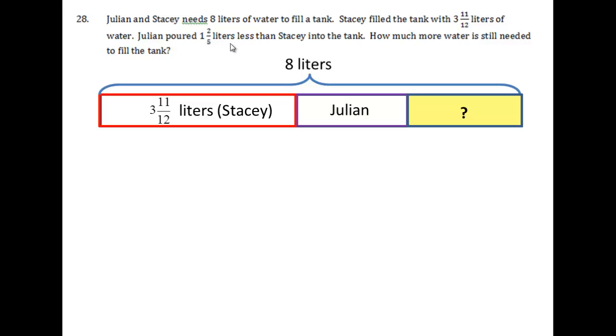Julian poured 1 and 2 fifths liters less than Stacey into the tank. And watch how I show this on the bar graph, on the bar model. If you take Stacey and you take away 1 and 2 fifths liters, you will be left with Julian. So let's take a look at this bar model again and see if that makes sense. Julian poured 1 and 2 fifths less than Stacey. So another way of saying that is Julian and 1 and 2 fifths liters is going to make Stacey. So first step, as you recognize, let's subtract them.